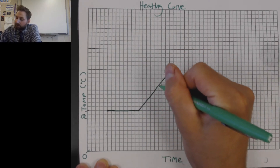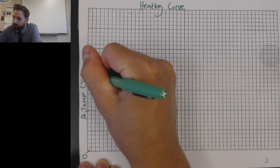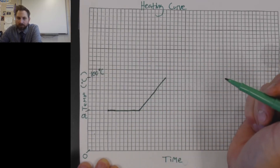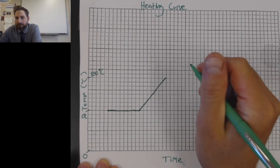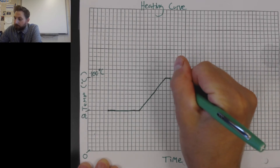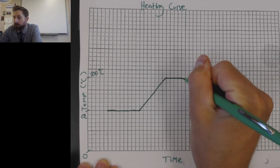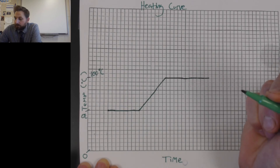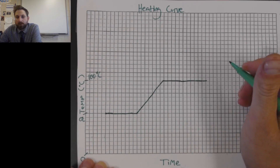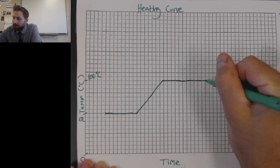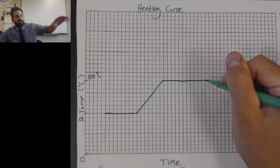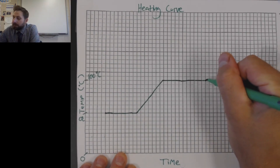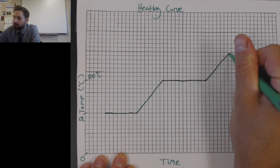Then what happens after our water gets to 100 degrees Celsius? It's going to boil. And our water has boiled away. Once the water has boiled away, we're left with steam. It's gone into the air. But if we were to keep heating that steam up, we would have a continual increase in temperature.